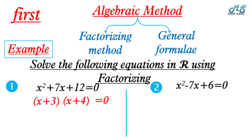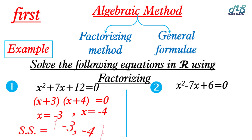We can deduce that x equals negative 3 and x equals negative 4 — just move 3 and 4 to the other side to be subtracted. The solution set is the set containing negative 3 and negative 4.